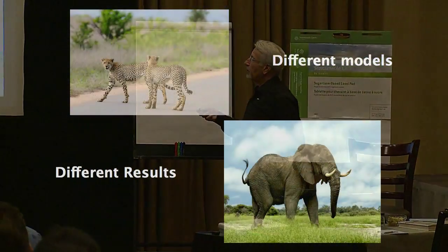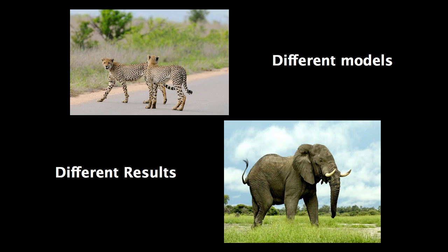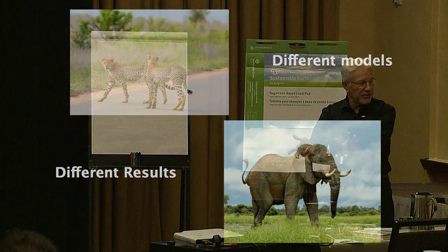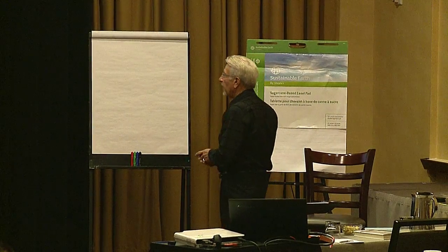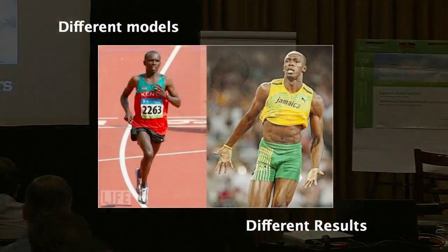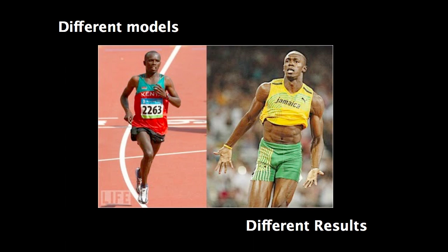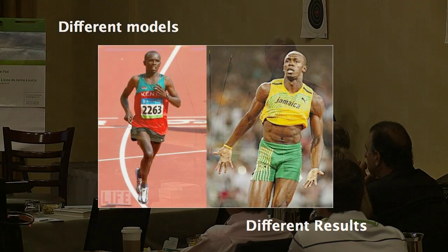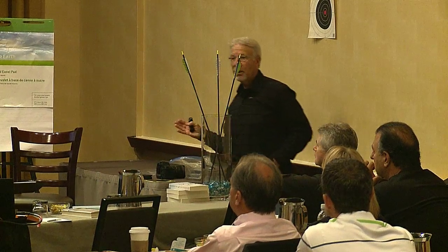Different models are designed for different results. These two animals aren't designed to behave the same or act the same — they don't even eat the same or get their prey the same. Even in athletics, a distance runner's body is totally different from a sprinter's body. A sprinter blasts out with so much energy it's frightening, but they only go 100 yards and they're done.